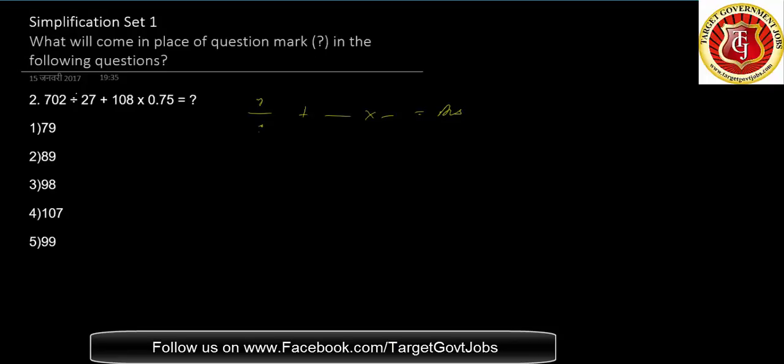You cannot convert and solve it in digitized format, so we have to by default go for approximation here. 27 times - 2s are 54, 3s are 81, so approximately 27.